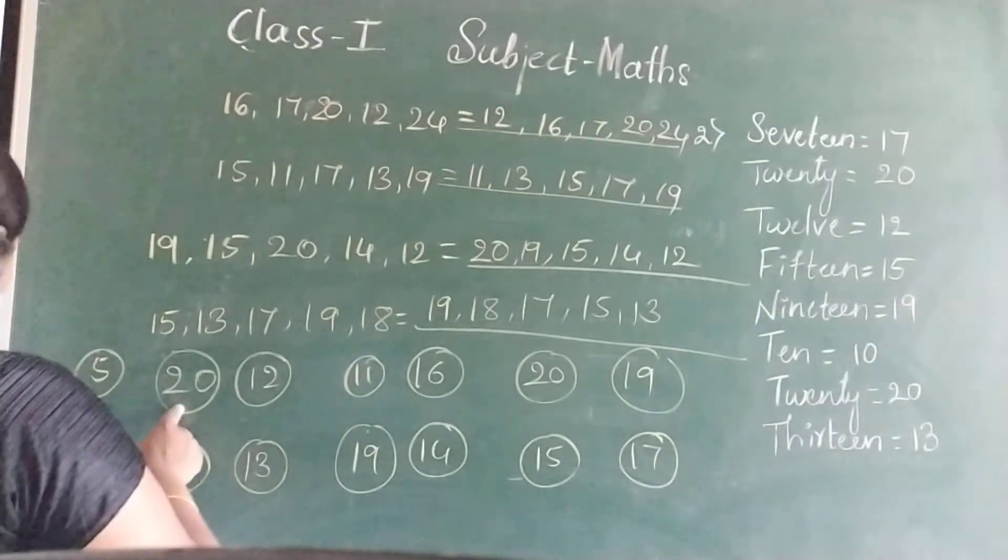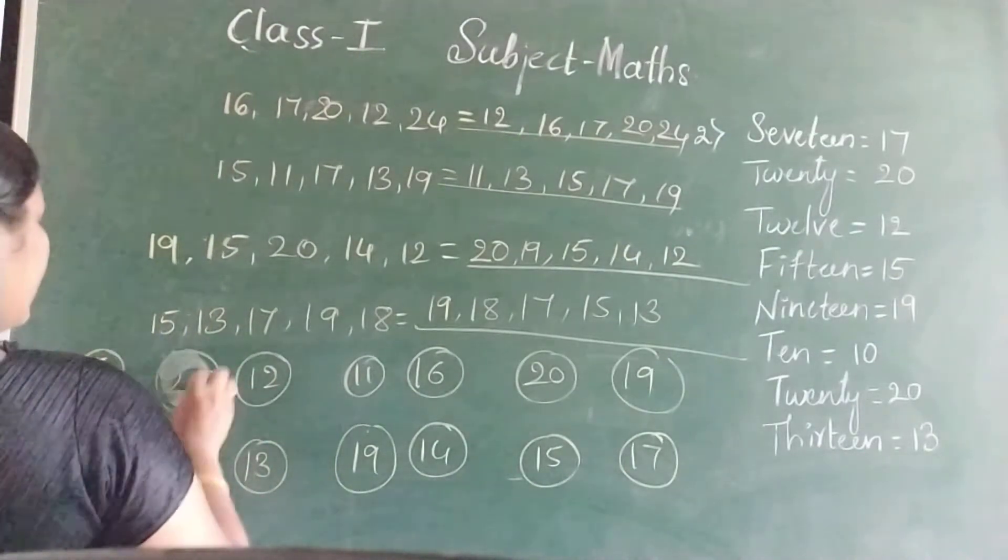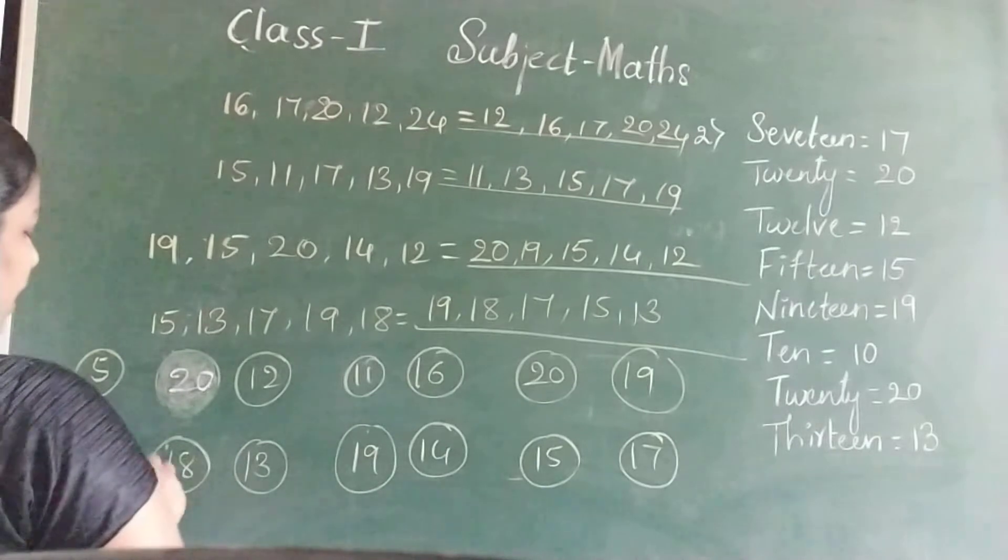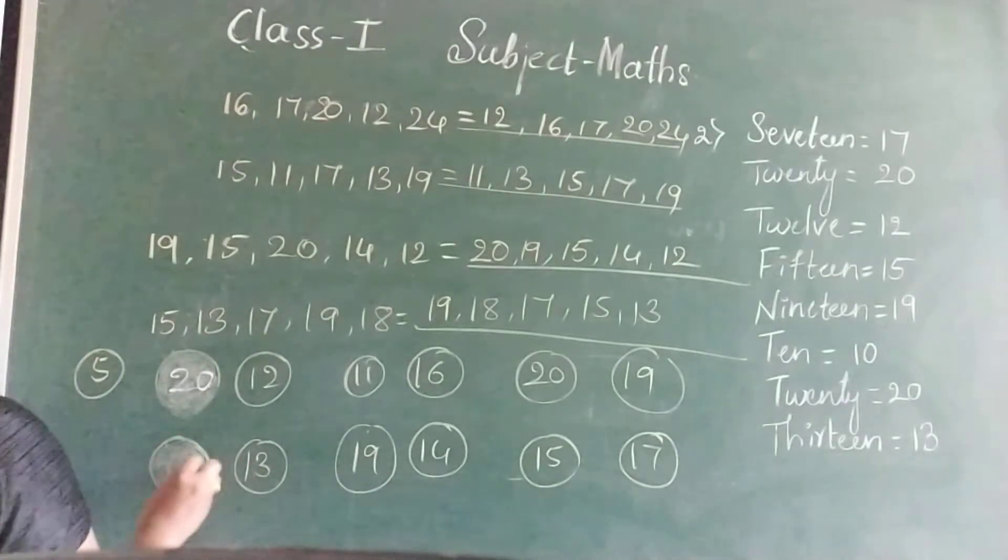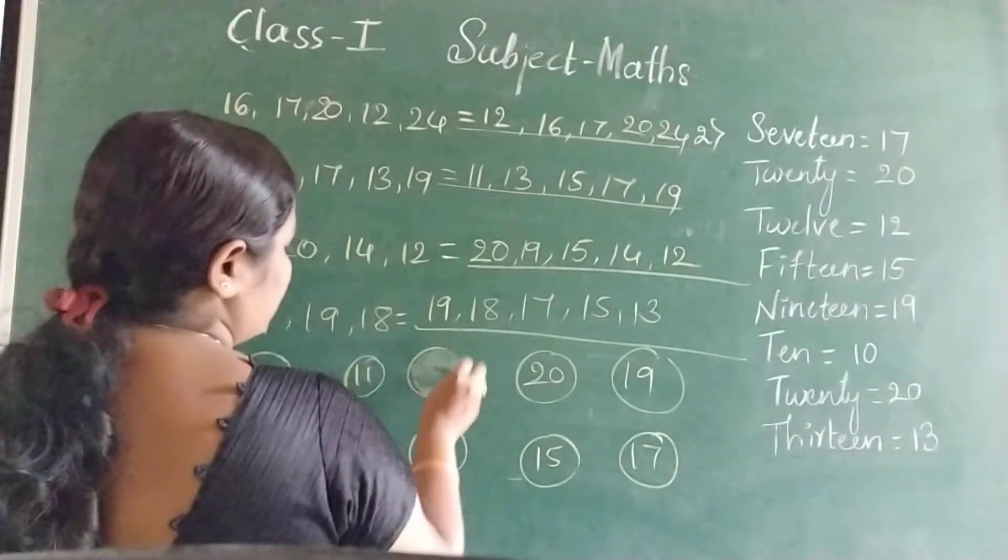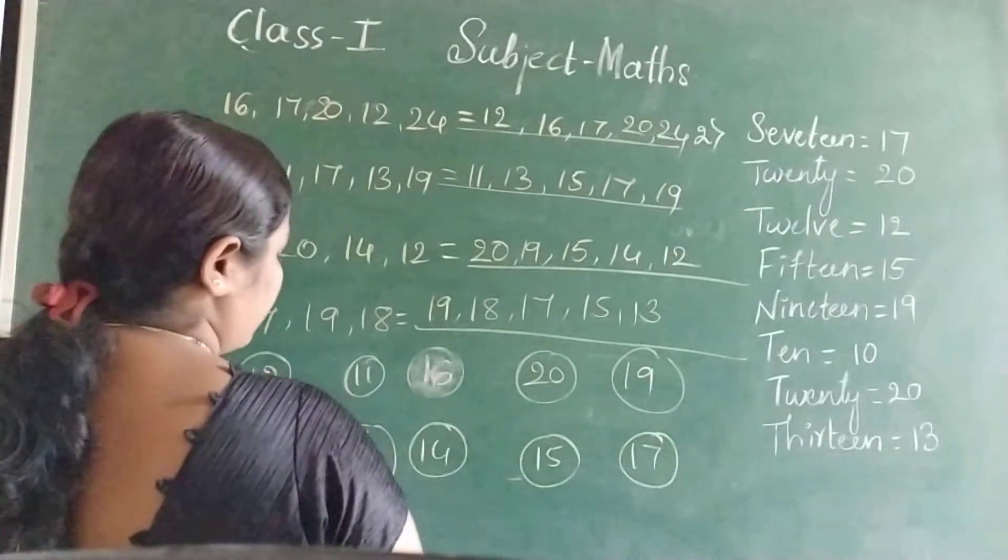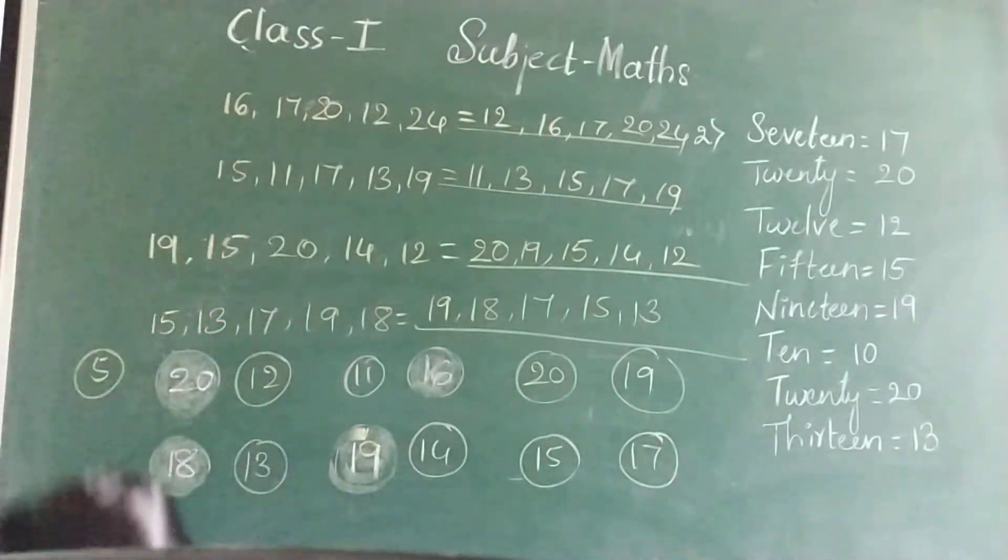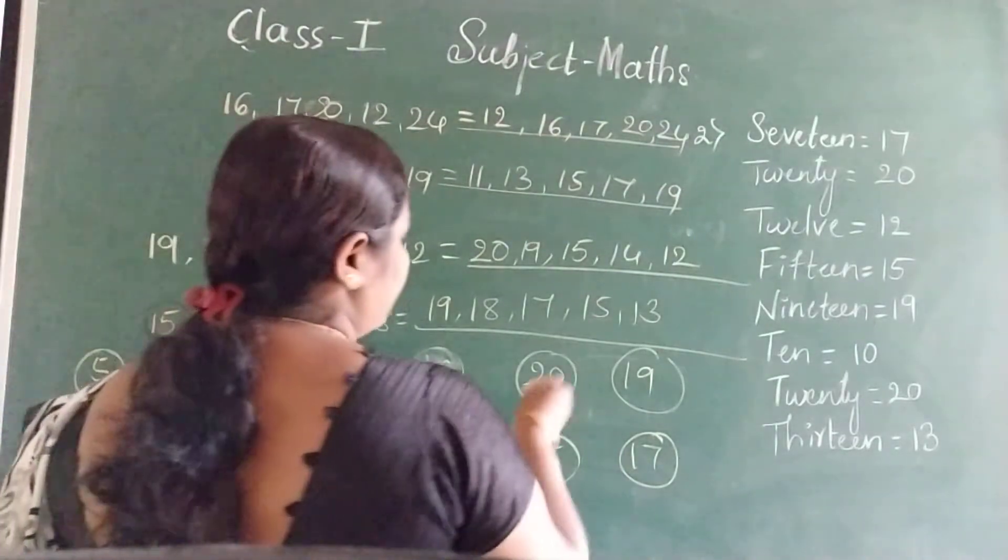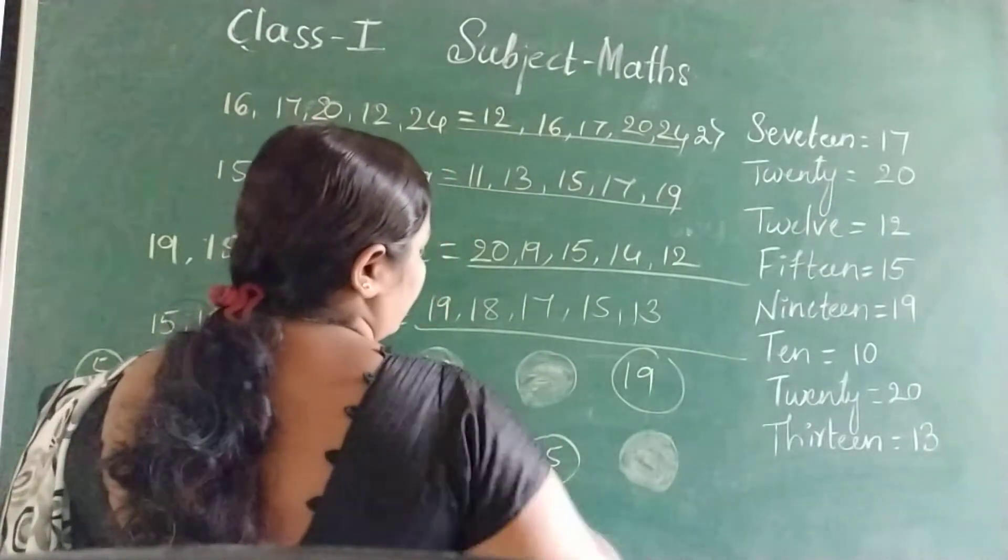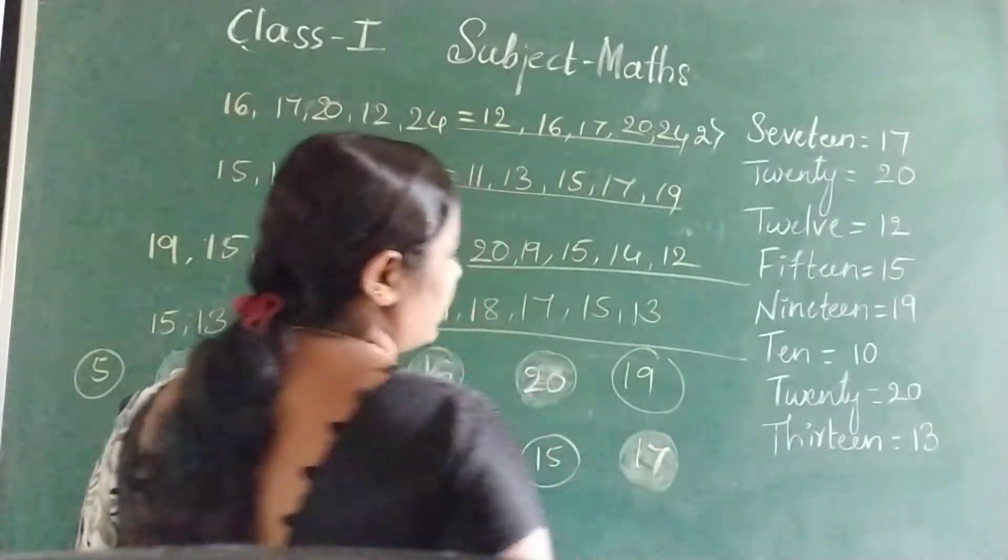Colour the greater number with green. First we will colour all the greater numbers by green. Compare two numbers. Which is big number? 20. So colour it by green. 18, 13. 18 is the big number. So colour it by green. 11, 16. So 16 is the big number. 19, 14. 19 is the big number. Then 20, 19. 20 is the big number.